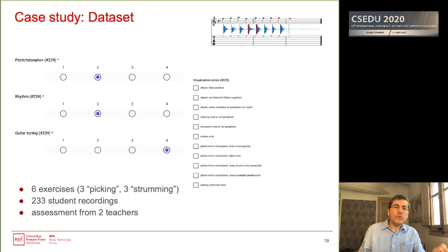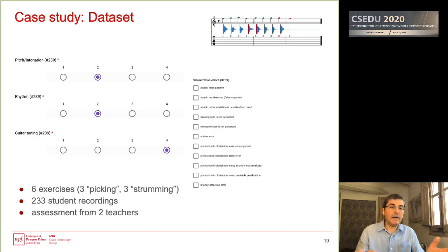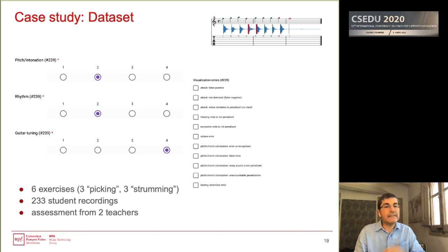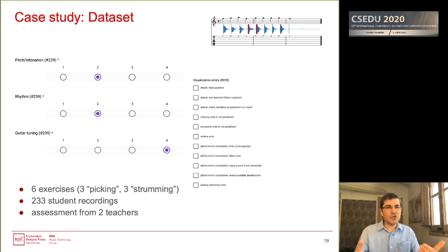Data collection is a fundamental element in this type of technology. We created a dataset of 233 recordings of students at different levels, using different guitars and different recording conditions, playing the six exercises from the course. Teachers were involved in manually assessing these recordings using the rating scales we defined, and we also asked them to rate the results the system would obtain. This provided what we call the ground truth — the data from which the machine learning would learn.